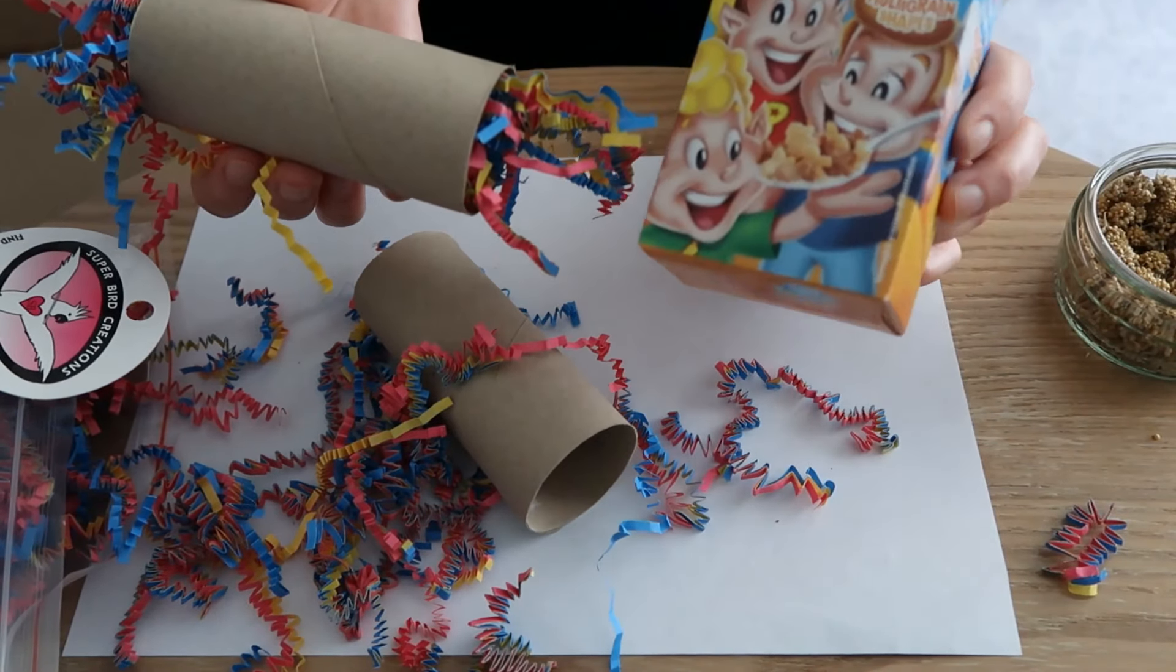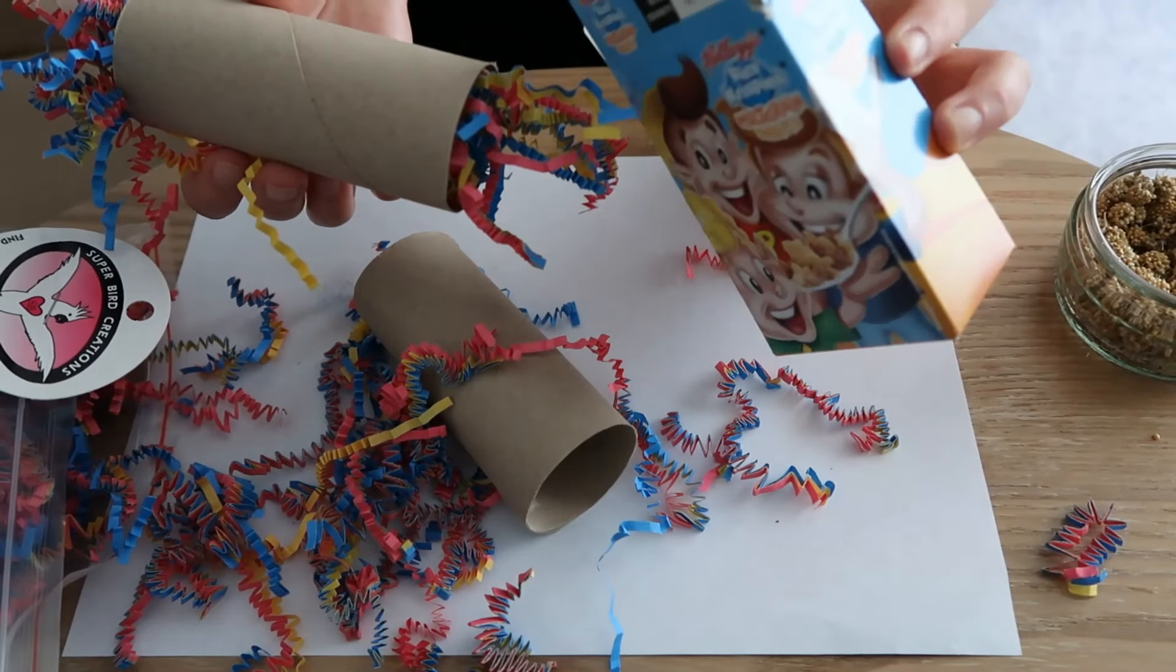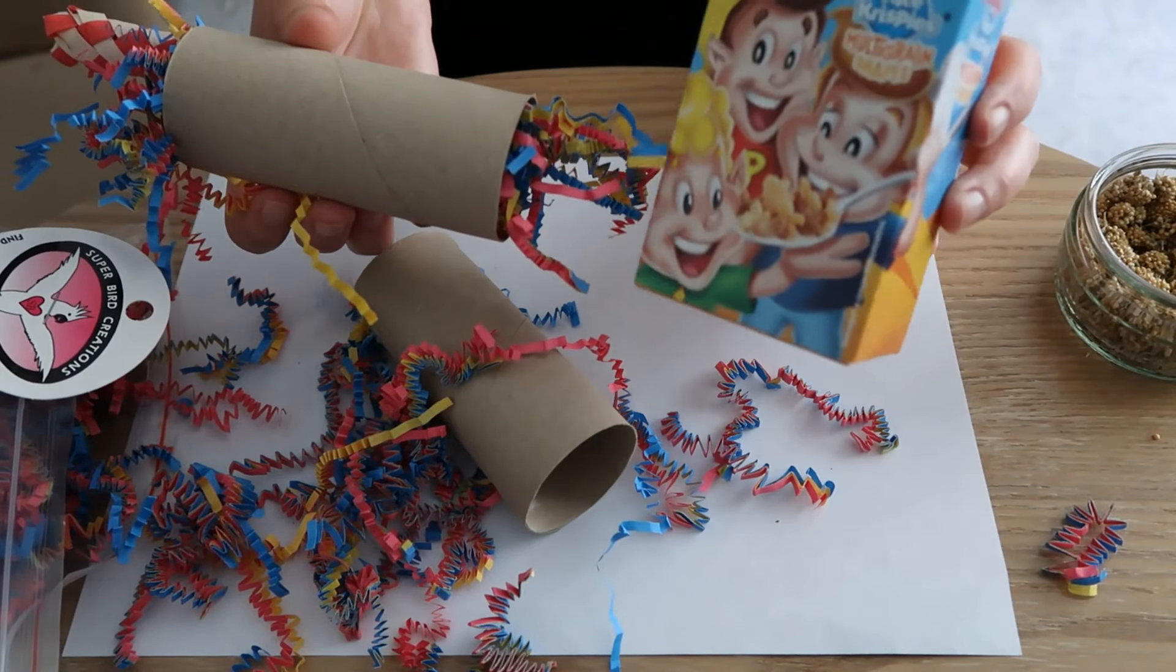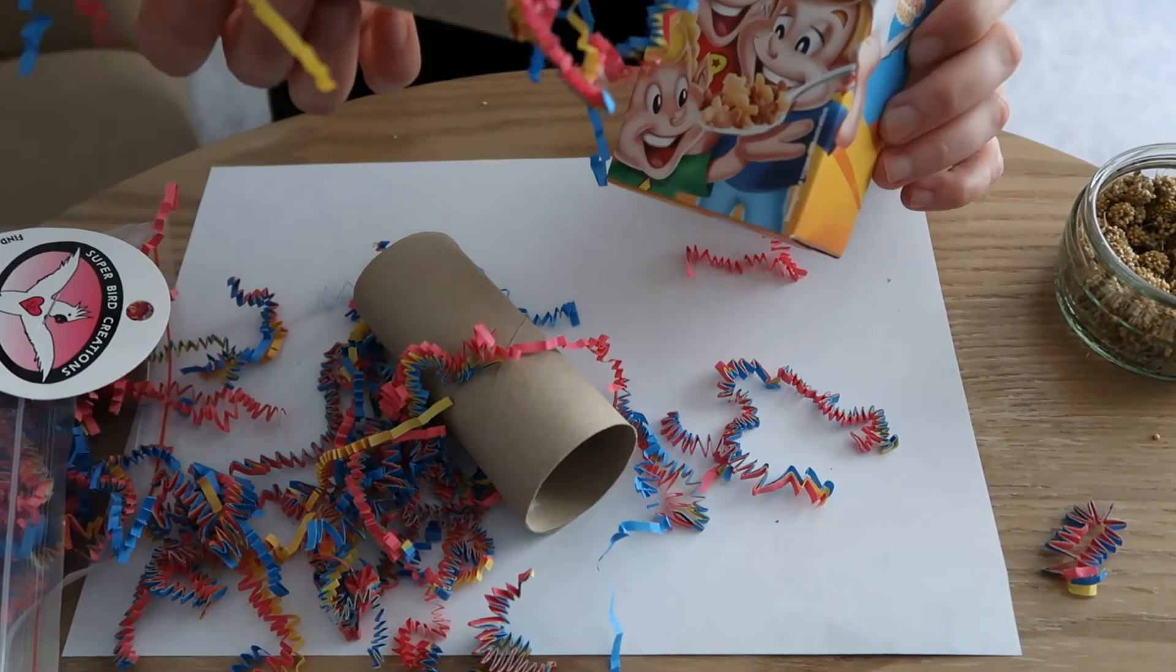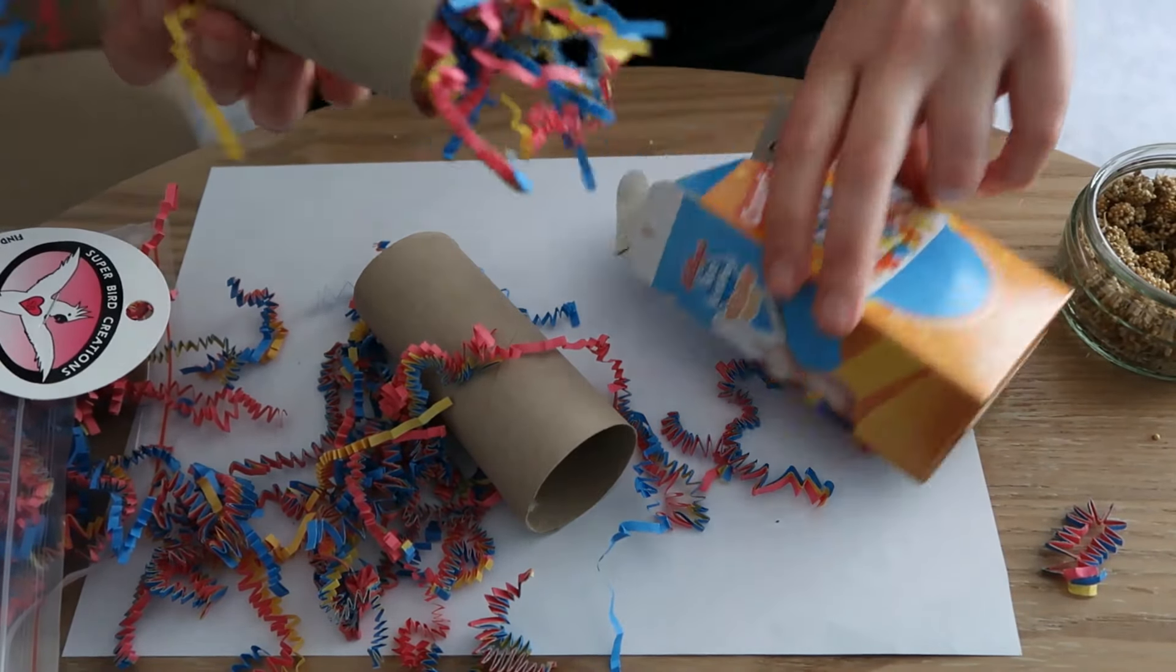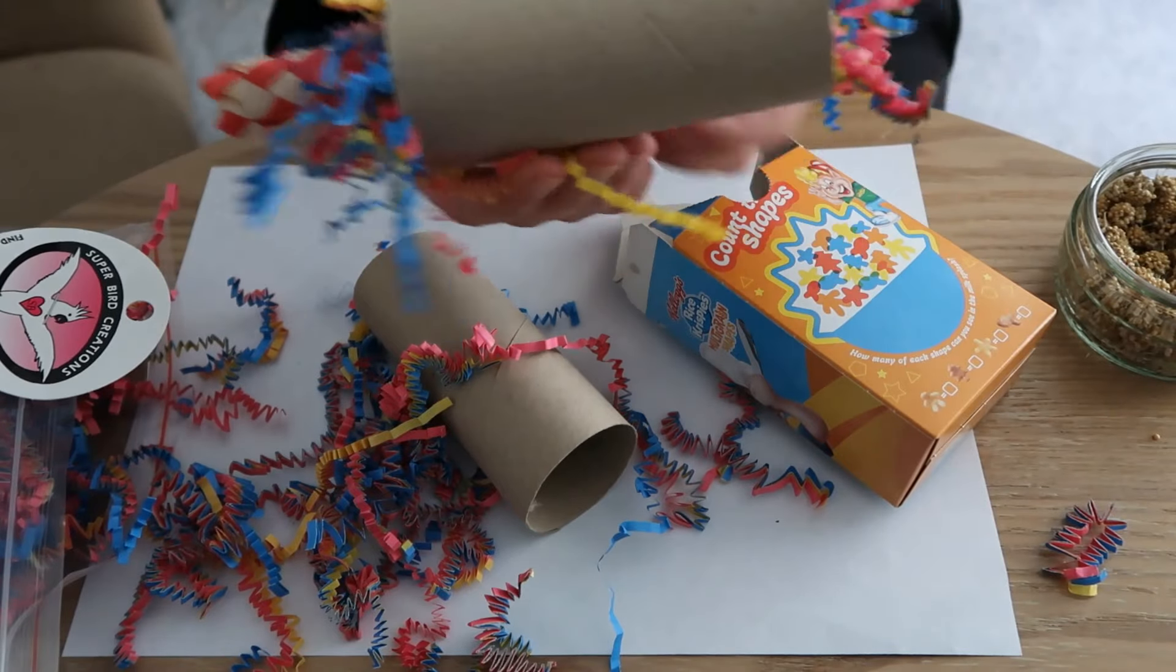Now you can do the same with cereal boxes. This is Pickle's favorite foraging toy. She loves to chew these to bits. But if you have got bigger birds than we do, you can substitute these with bigger boxes like bigger cereal boxes, biscuit boxes, and of course kitchen roll tubes. So this is kind of the finished product.